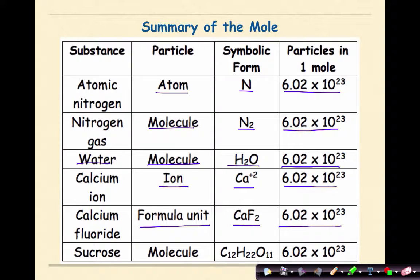And finally, just like we saw, sucrose is a molecule with a chemical formula of C12H22O11. And in one mole of sucrose, we'd have 6.02 times 10 to the 23rd molecules.